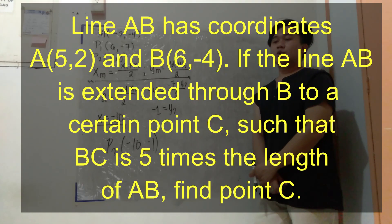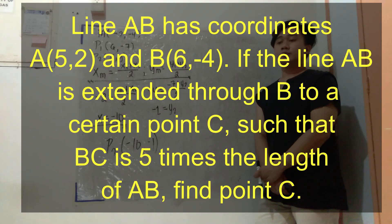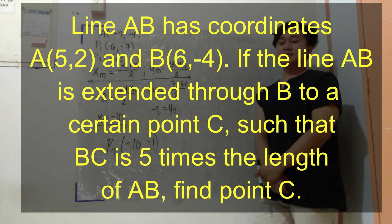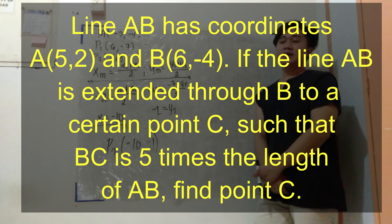Line AB has coordinates A(5, 2) and B(negative 6, 4). If the line AB is extended through B to a certain point C, such that BC is 5 times the length of AB, find point C.